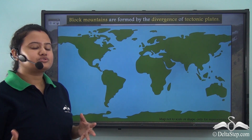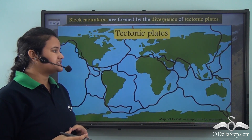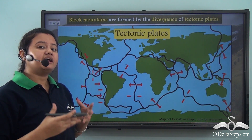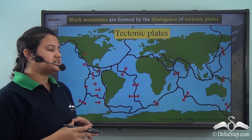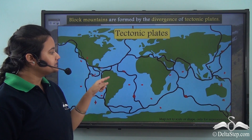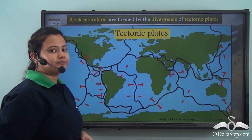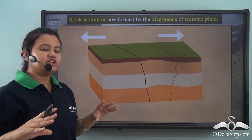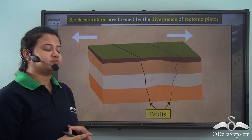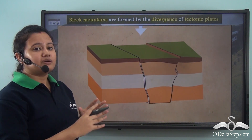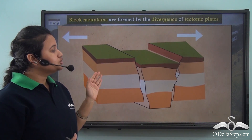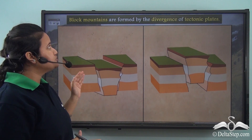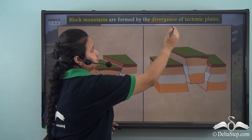Some mountains are formed in a similar manner. Our earth's crust is divided into several lithospheric or tectonic plates, which are not stationary but in constant motion. The tectonic plates either diverge or converge. When tectonic plates diverge, the strip of land in between gets stretched and cracks or faults are formed. As the plates move further apart, the land in between subsides or raises up, thereby forming a block mountain.